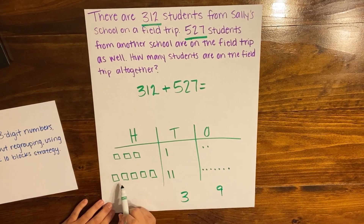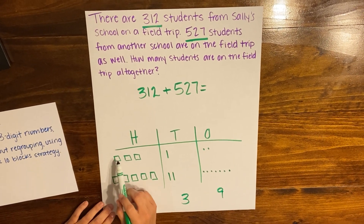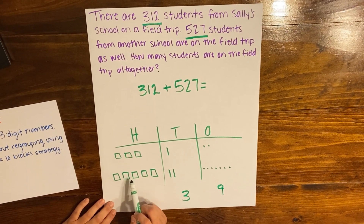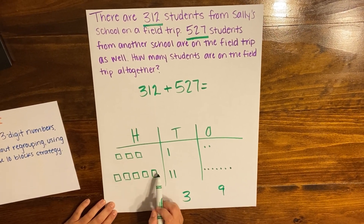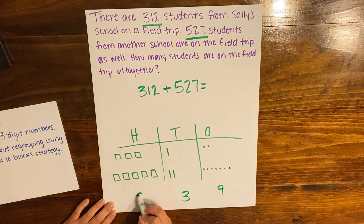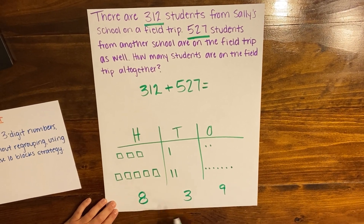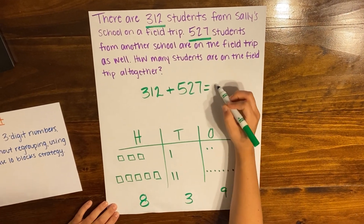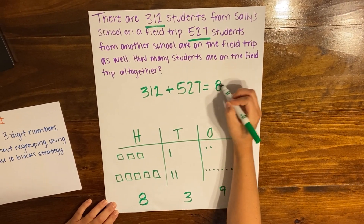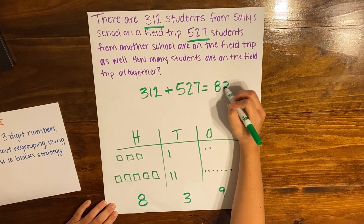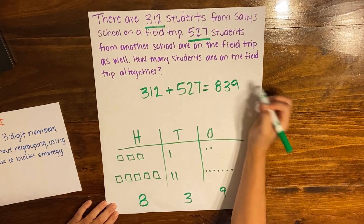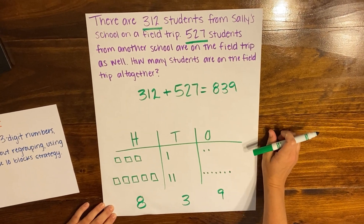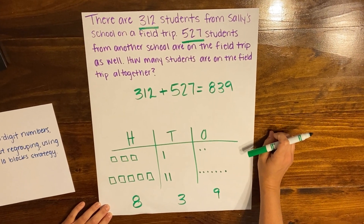In my hundreds column, I count one, two, three, four, five, six, seven, eight hundreds. So when I put these all together, my sum is 839. So 839 students were on the field trip altogether.